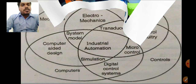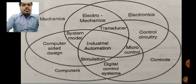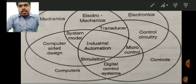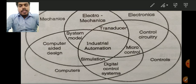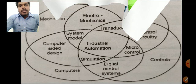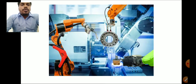Automation minimizes human involvement in the process. The benefit of automation is that it minimizes human involvement in any operation, due to which we are actually improving the productivity and also the product quality.